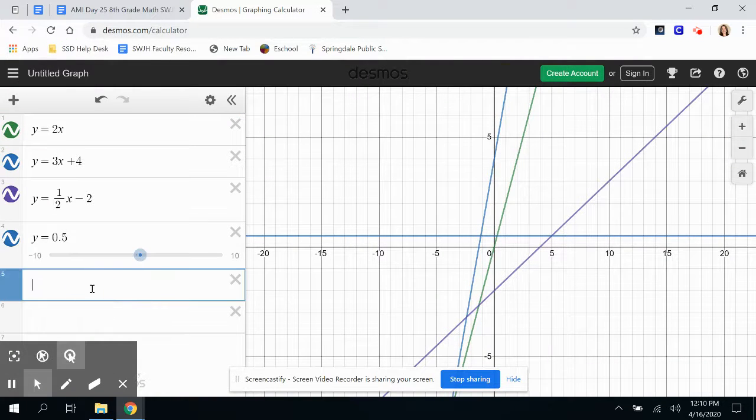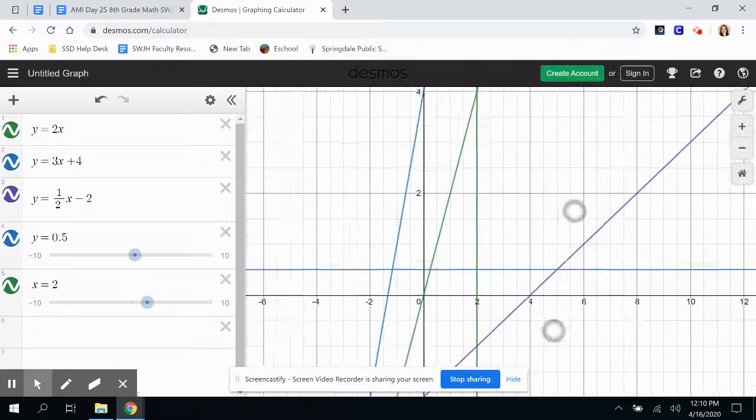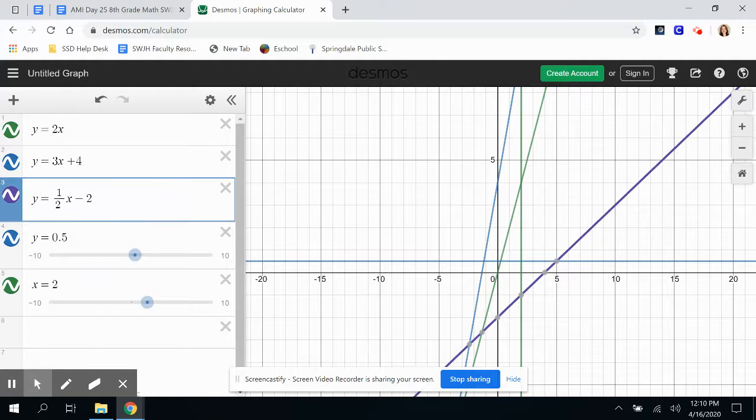What if you had X equals two, maybe X equals two? That is a, let's see, a vertical line, a vertical line at X equals two, and it goes straight up and down in a vertical line. That's what it looks like when you have vertical and horizontal lines.